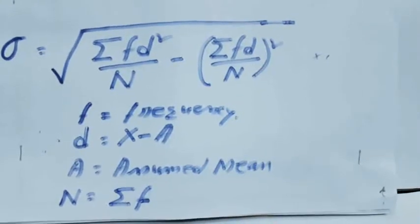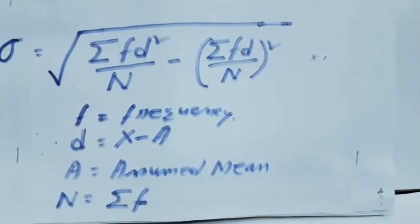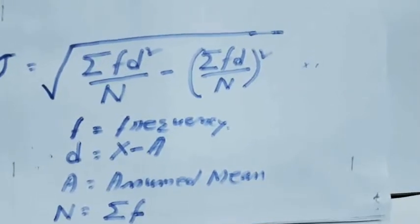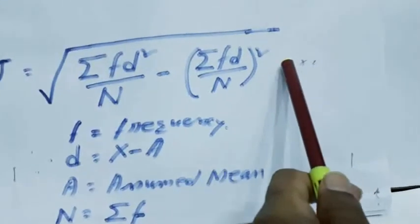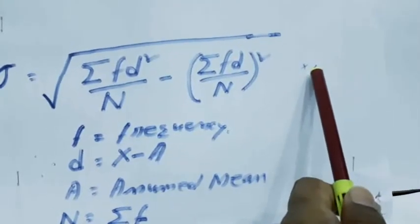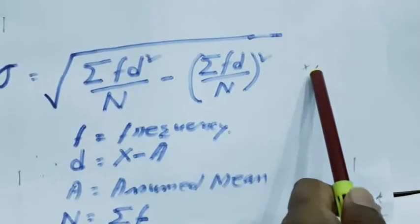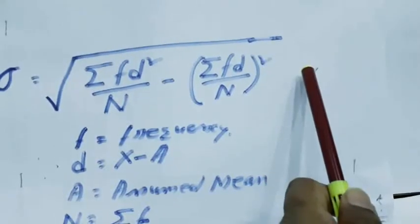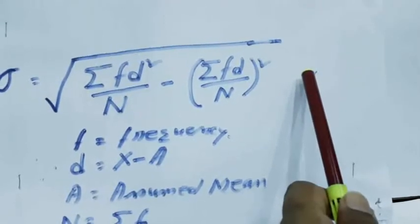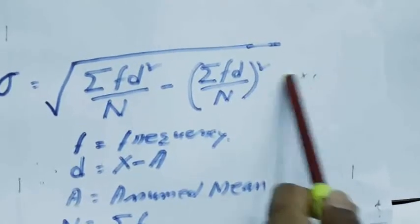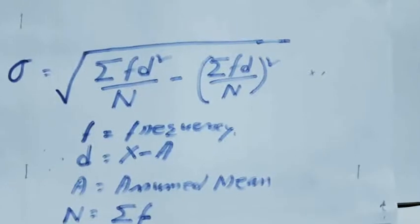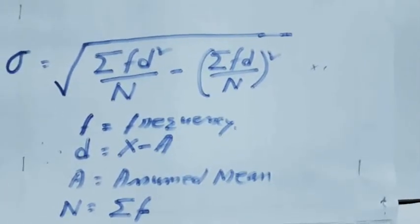We will apply this formula in case of calculating the standard deviation for a continuous series. Sometimes, we multiply this formula by i also. i means the size of the class interval, the difference between the upper class interval and lower class interval, to make the value small or to change the scale. If we change the scale of the value, then we will multiply it by i, the gap between the two intervals.